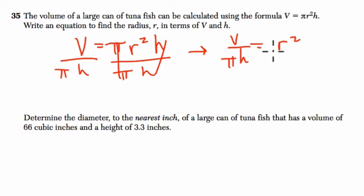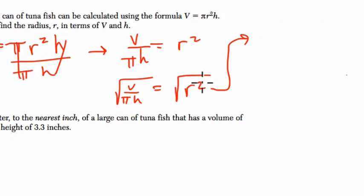To find r, we take the square root of r squared—square root of r squared and the square root of V over πh. Now, square root of r squared is just r, right? The square root and the square root cancel out, and r equals the square root of the volume divided by π, the product of π and h. That's our answer.